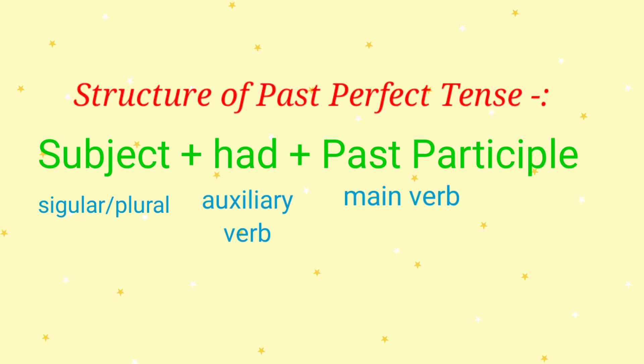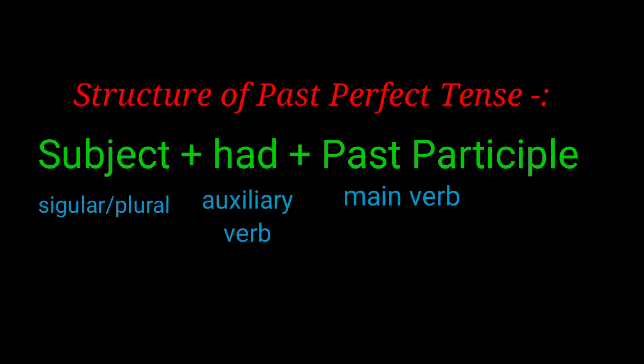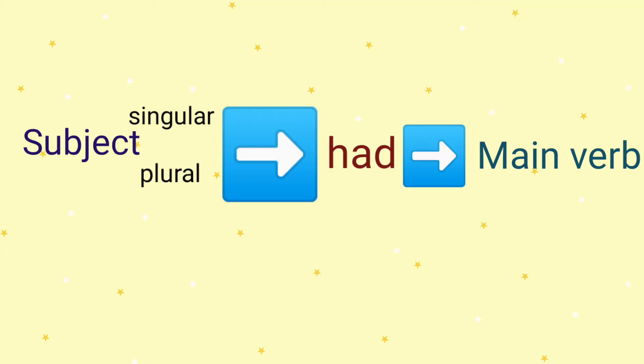Now let's look at the structure of past perfect tense. It is: subject + had + past participle. The subject can be singular or plural — it does not matter. It's followed by the auxiliary or helping verb 'had', and the main verb is in the form of past participle — the third form of verbs. You have to learn them.